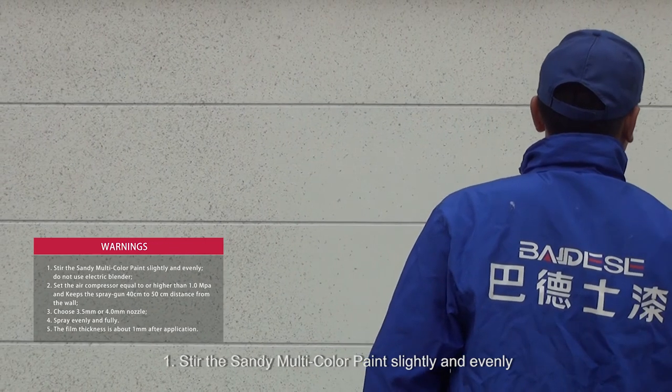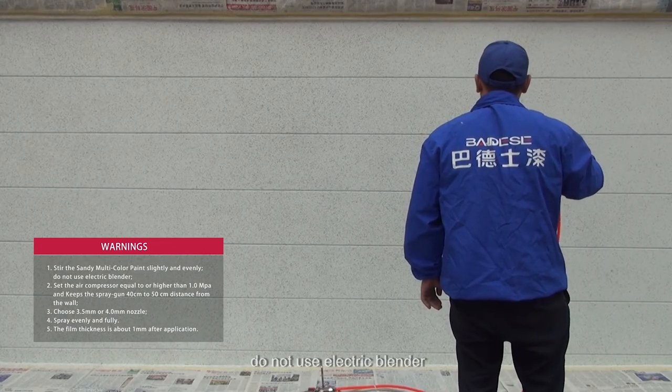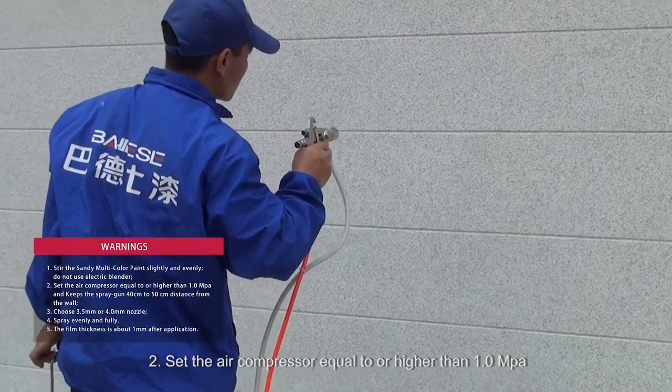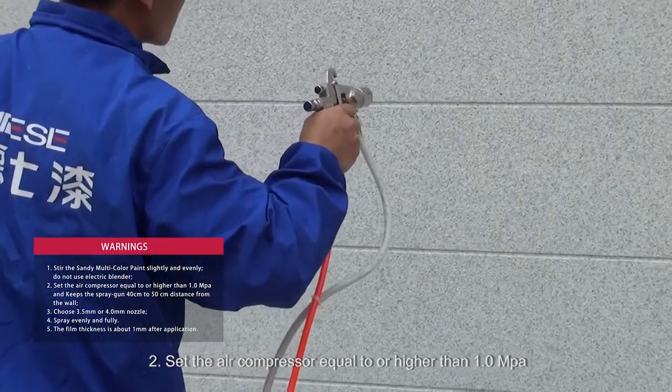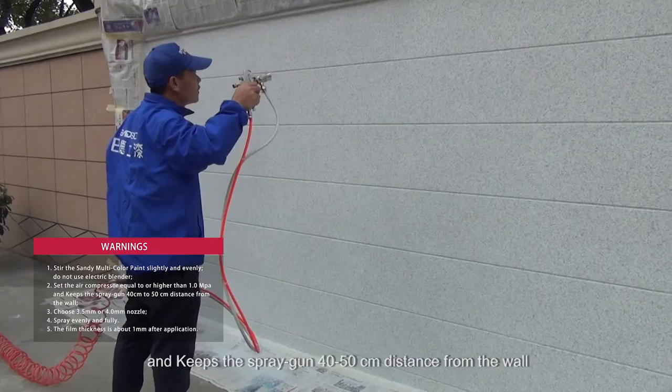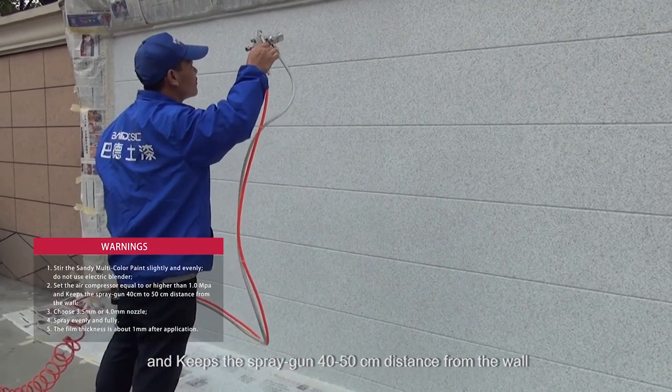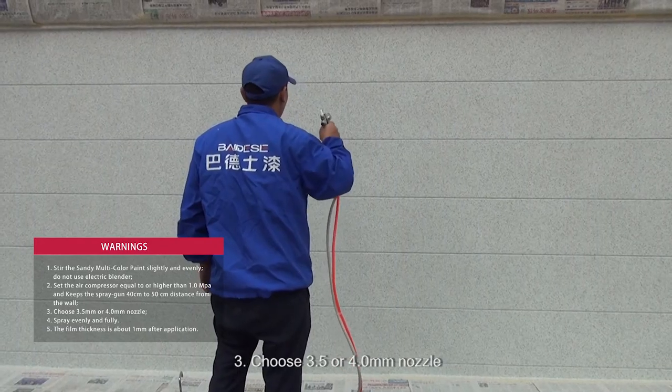One: stir the sandy multicolored paint slightly and evenly. Do not use electric blender. Two: set the air compressor equal to or higher than 1.0 megapascal and keep the spray gun 40 to 50 centimeter distance from the wall. Three: choose 3.5 or 4.0 millimeter nozzle.